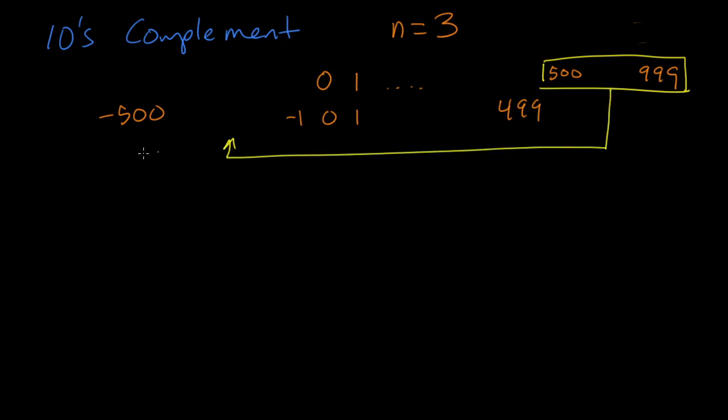So 500 becomes negative 500, 501 becomes negative 499, and 999 becomes negative 1. And you can see here the difference is exactly 1,000, which is the same thing as 10 to the 3rd, where 3 is our n. And this 1,000 here looks a lot like the 2 to the 8th that we had before, which was 1 followed by 8 zeros. In this case, we've got a 1 followed by 3 zeros. So to get from our upper range of numbers to our lower range of numbers, we just need to subtract 1,000.